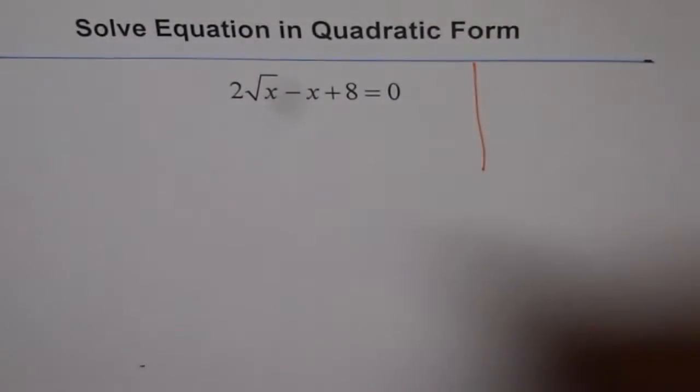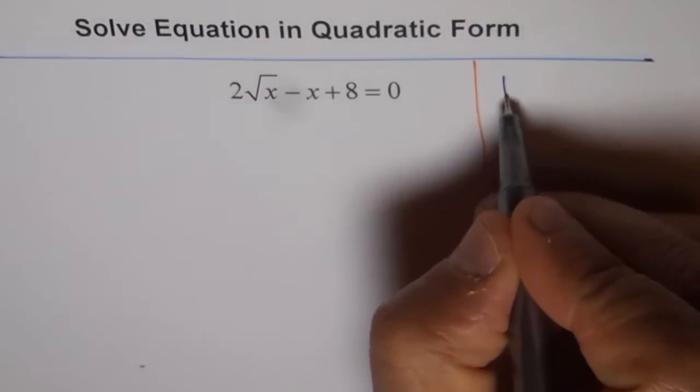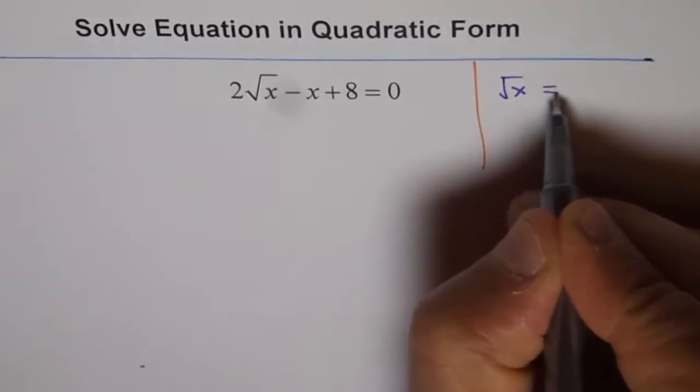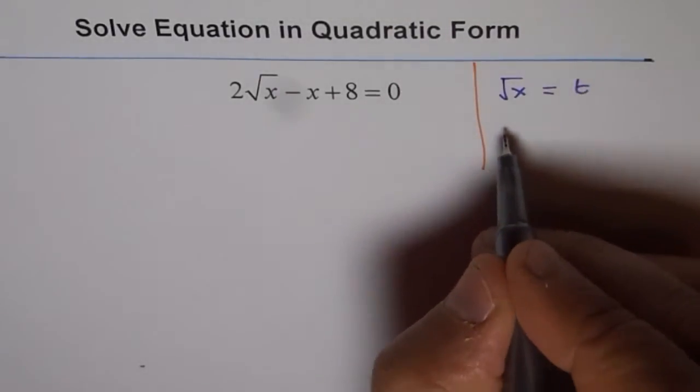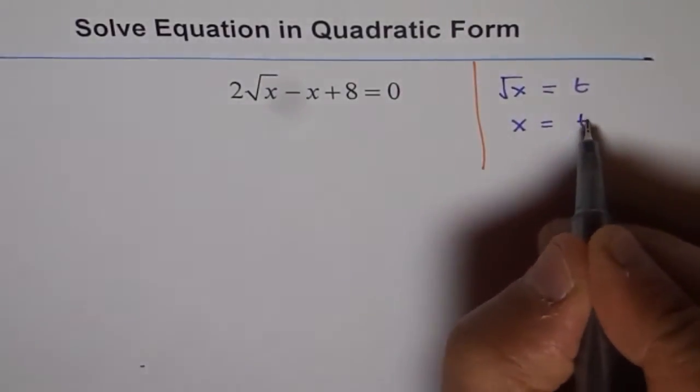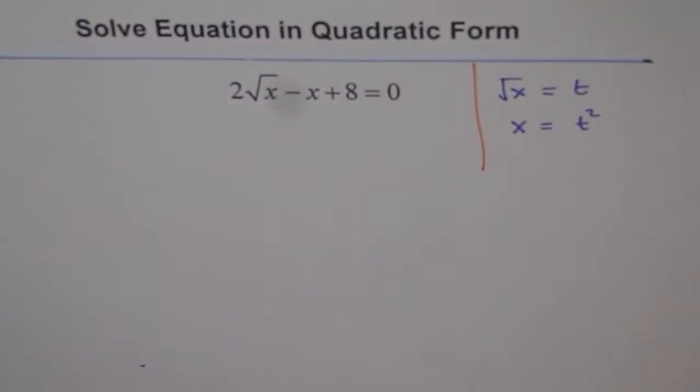What I will write as let square root of x be equal to t. In that case, x will be t squared, correct? When you square it, you get x equals to t squared. So we will do this substitution and solve our equation.